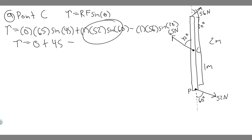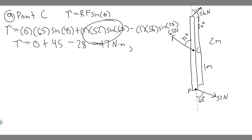So 52 times sine of 60 gives you essentially 45, and then 56 times sine of 30 gives you 28. So 45 minus 28 gives you plus 17. This is measured in newton meters, because radius is in meters and force is in newtons. So 17 newton meters.